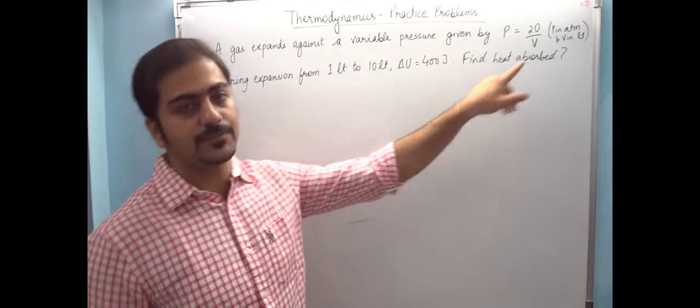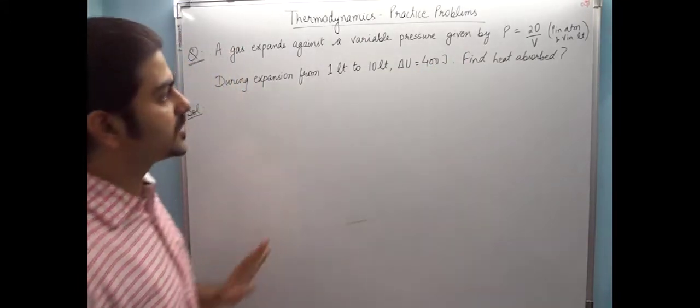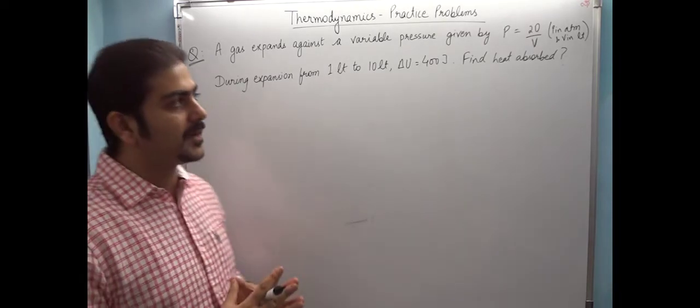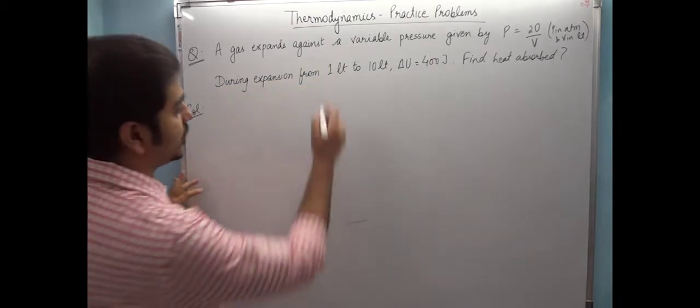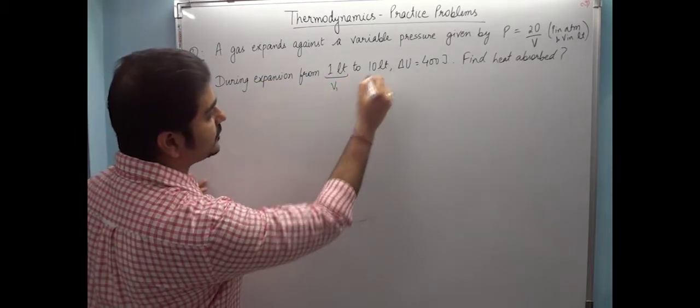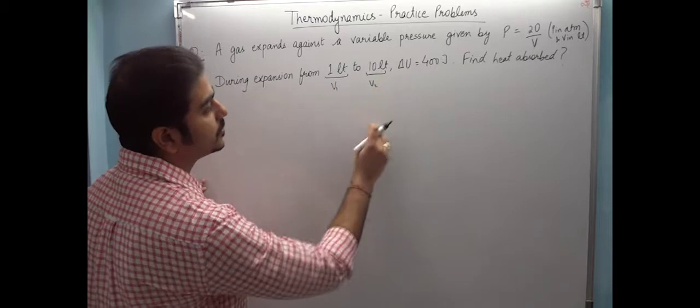The question is simple. Here we have a variable pressure, volume can change. This is initial volume V1, this is final volume V2, delta U is given.